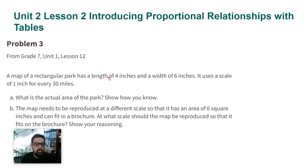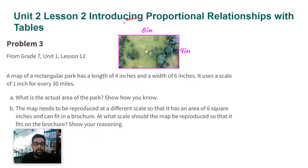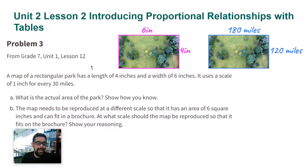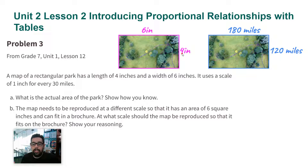There are several ways to do this. I'm going to show you the way of doing it by drawing the figures. Here we have our original drawing — the map of the park has a length of four inches and a width of six inches. It uses a scale of one inch for every 30 miles. Here is the scaled copy — I got these numbers by multiplying by 30.